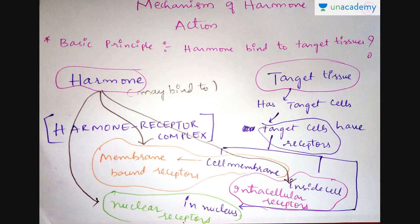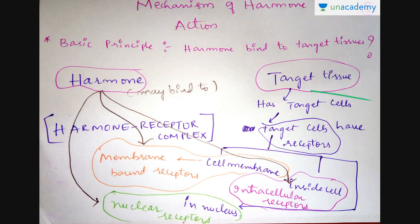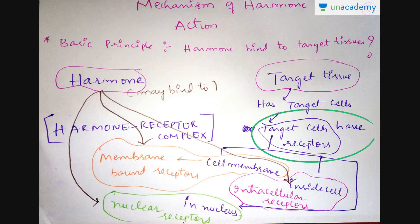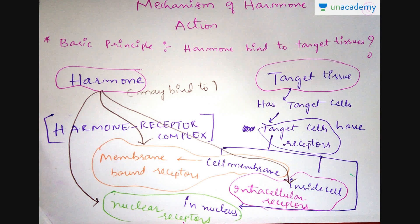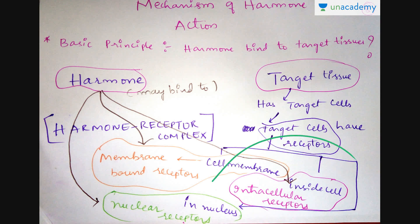In this slide we will see the mechanism of hormone action. The basic principle is that a hormone binds to a target tissue, but the process is very complex. Target tissues have a type of cells called target cells. These target cells have receptors on them. These receptors may be on the cell membrane, called membrane-bound receptors, or they may be inside the cell, called intracellular receptors, or they may be in the nucleus, called nuclear receptors.